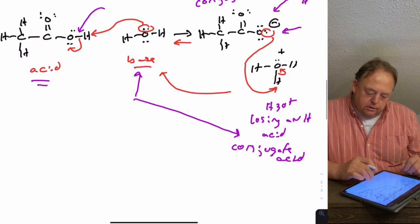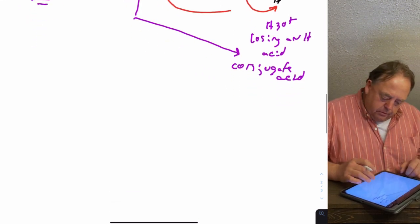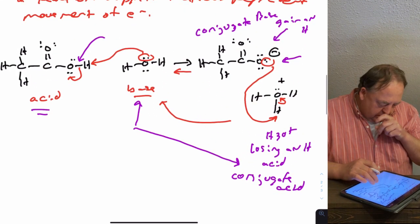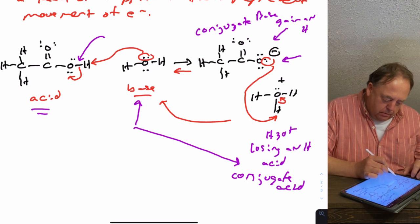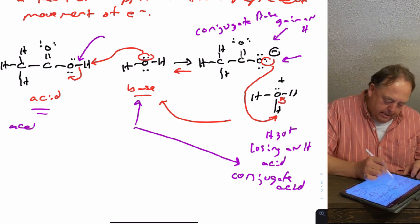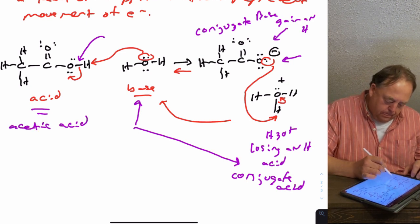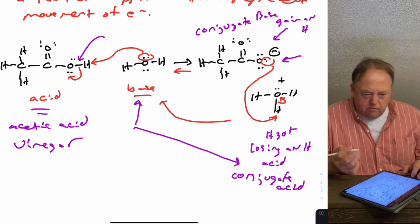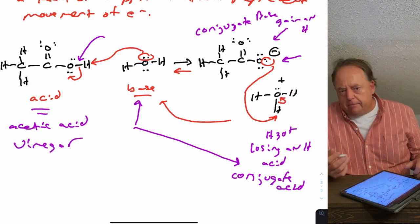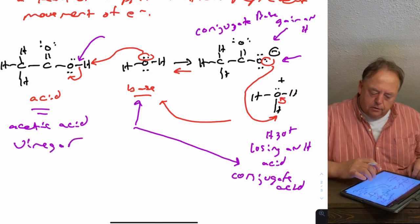Let's take another example. This is an acid you're probably all familiar with — it's called acetic acid, which is also vinegar, which you find in pickle juice for example.